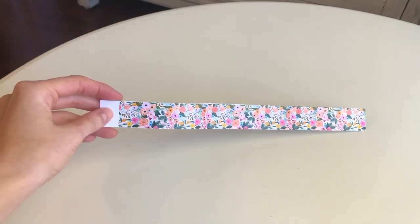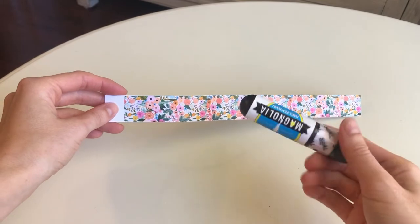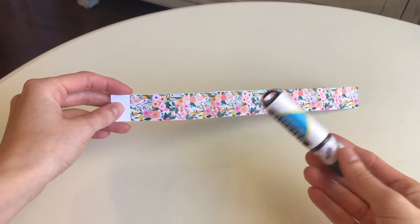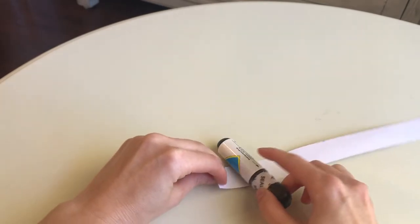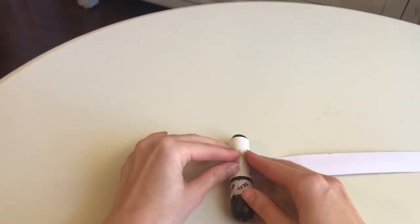Next take your paper, glue stick, and something round. You can use a wooden dowel. I'm using chapstick because I don't have a wooden dowel. And you're going to wrap your patterned paper around your object.